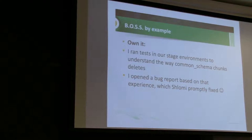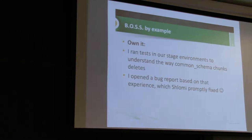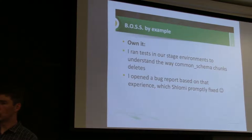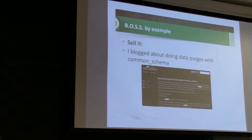I ran a bunch of tests on our staging environment, fiddled with all the different chunk sizes and different levers. I actually found a bug when I was using it — there was something about one of the tables I was trying to delete on where Common Schema couldn't find the right unique index — basically couldn't find the right primary key index to use for chunking. It was failing, so I opened a bug report. Shlomi fixed it, I think, the same day — that was a quick turnaround. I had also figured out a workaround, since this is a pretty flexible tool: I came up with a way to trick it into doing what I wanted even though the automatic way didn't work.